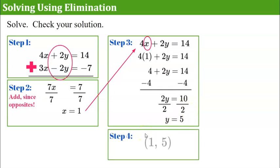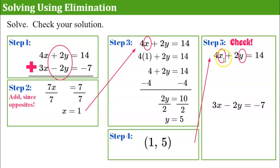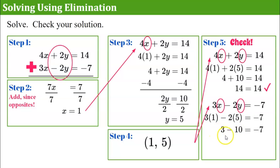Step 4: write our solution as an ordered pair — when x is 1, y is 5. Step 5: check. Bringing over our two equations: 4x plus 2y equals 14 and 3x subtract 2y equals negative 7. Replacing x with 1 and y with 5 in both: 4 times 1 plus 2 times 5 is 4 plus 10 equals 14 — it checks. For the second equation: 3 times 1 subtract 2 times 5 is 3 subtract 10 equals negative 7 — it checks. The solution is the ordered pair (1, 5).